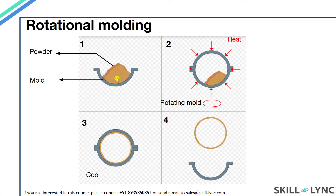In rotational molding, powder is placed in a shell first. The shell is then closed and the system is rotated. Heat is applied from the outside, resulting in the formation of the component on the outer edge. The part is then cooled and ejected. Rotational molding is used for the creation of hollow parts like toys.